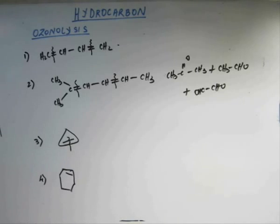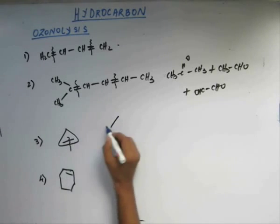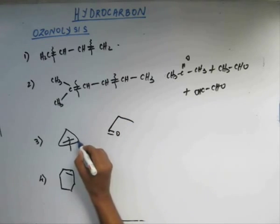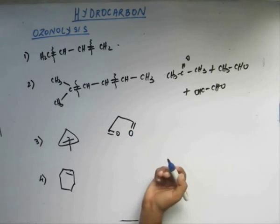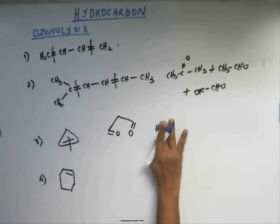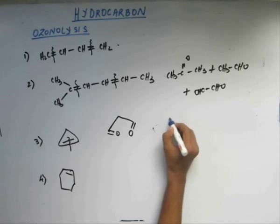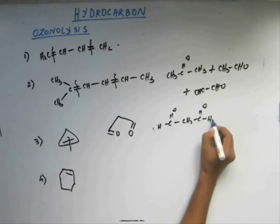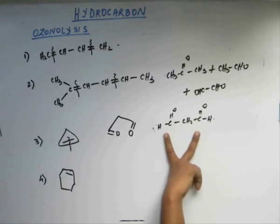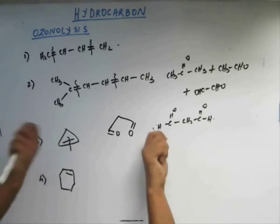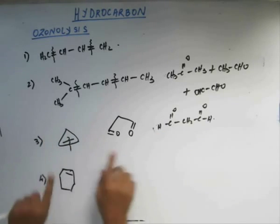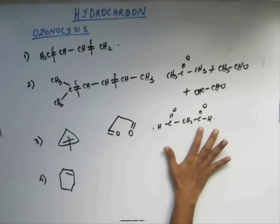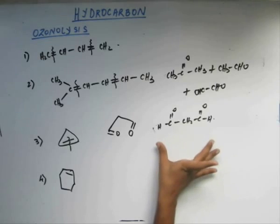Now let's break this ring. If you break this, then this carbon will form C double bond O and this carbon will also form C double bond O. So if we write it properly, you will have 1,3-propanedial. If you open up the ring, this is a three-member acyclic chain with C double bond O at one position and three position — this is 1,3-propanedial.